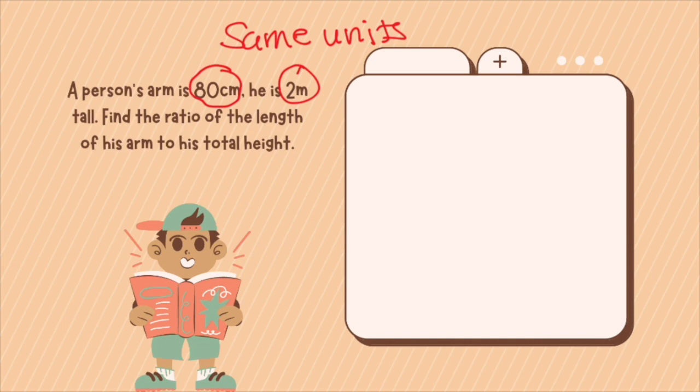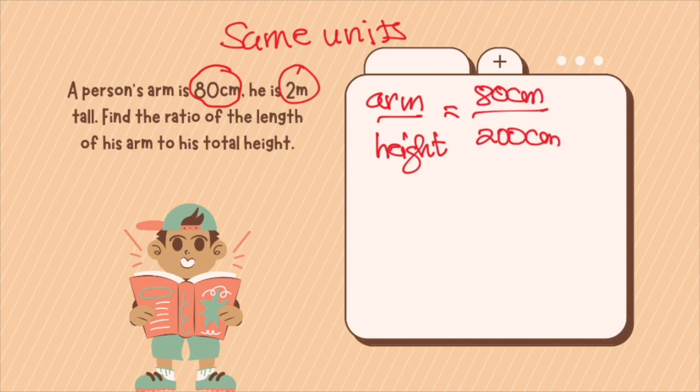So your arm to your height, let's convert both to centimeters, will be 80 centimeters over 200 centimeters. Once we have the same units, then we can simplify them. So 80 over 200 will be divided by the common factor, which is 40. So you will have 2 over 5, which means that the ratio between the person's arm and his height will be 2 is to 5.